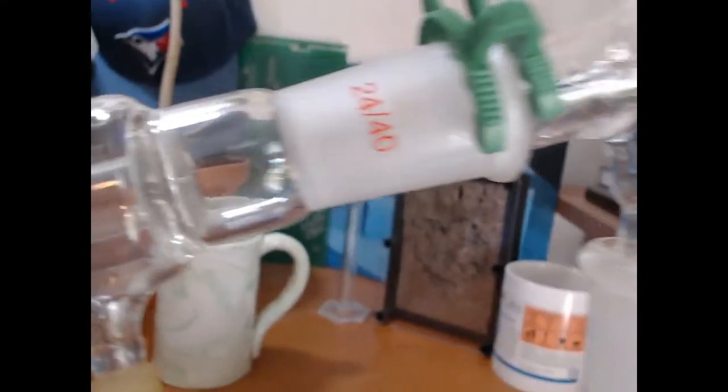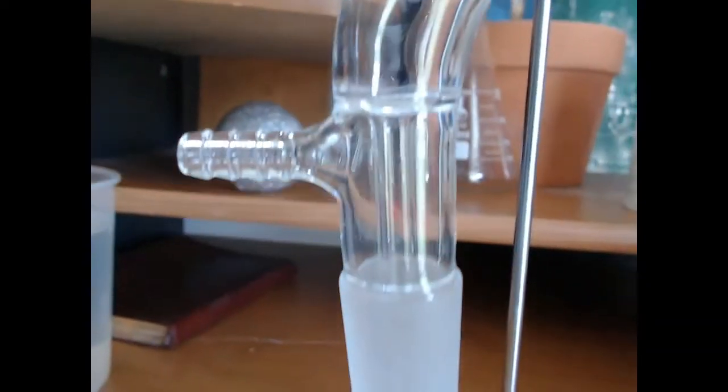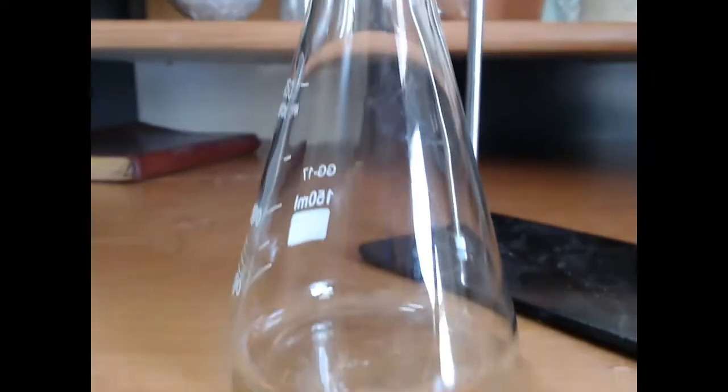The steam will travel up and out of the round bottom flask and enter the condenser, where the steam will be turned back into water, which will flow down the tube and is collected by the receiving flask.